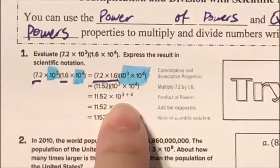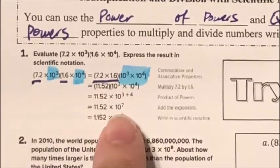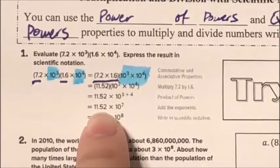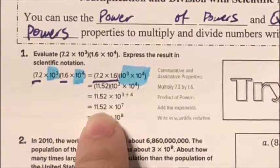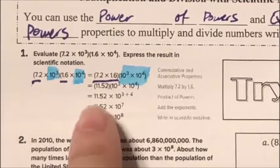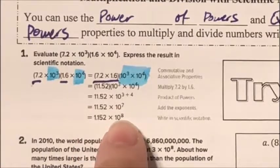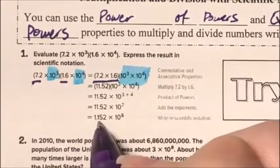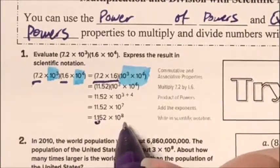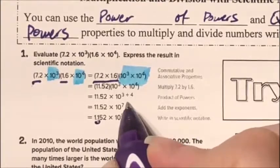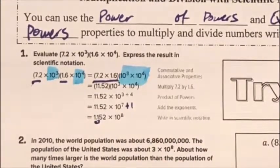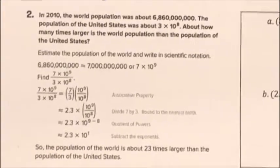Then 10³ times 10⁴ — using Power of Powers, I add the exponents: 3 plus 4 gives me 7. But 11.52 is not in scientific notation because 11 is greater than 10. I move the decimal over one place and add one to the exponent: 7 plus 1 equals 8. So the answer is 1.152×10⁸.